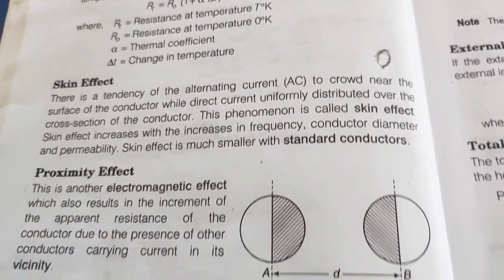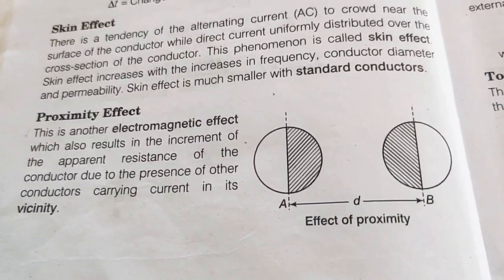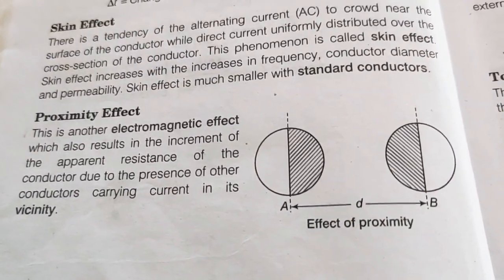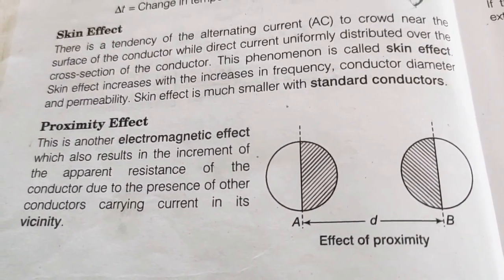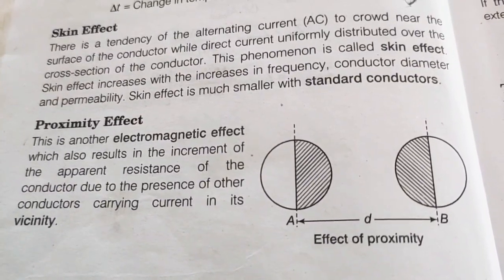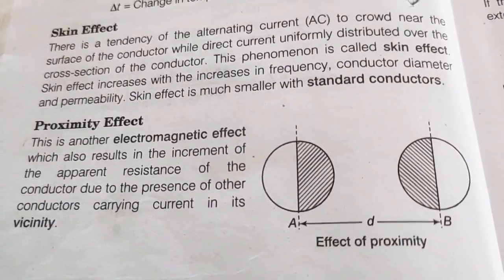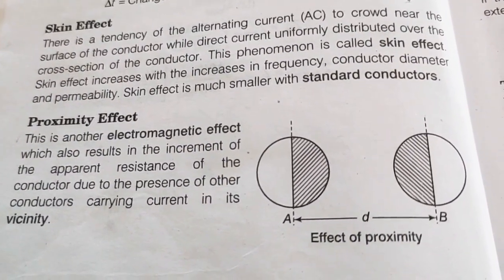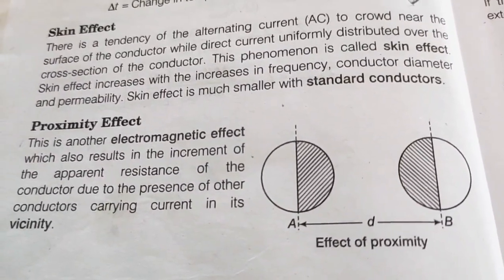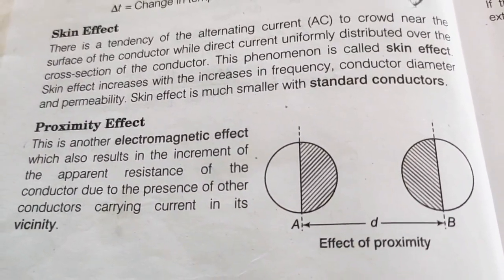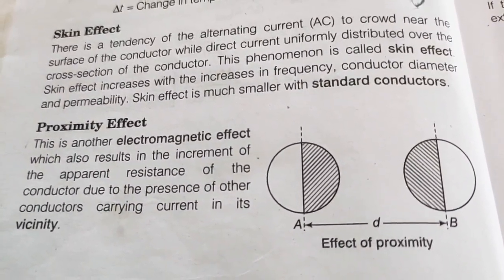Another important parameter is the proximity effect. This is another electromagnetic effect which also results in the increment of the apparent resistance of the conductor due to the presence of other conductors carrying current in its vicinity.